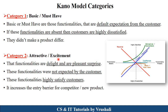The second category is attractive and excitement features. This means a feature not expected by the customer, but still the developer adds this feature to the product. For example, the customer didn't want an audio call feature, but the developer added it — this is a pleasant surprise to the customer, and at that time customers are highly satisfied. If these functionalities are present, customers are highly satisfied. But if these functionalities are absent, customers are at a neutral level — they are not dissatisfied.